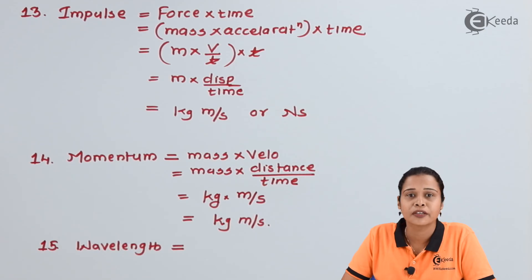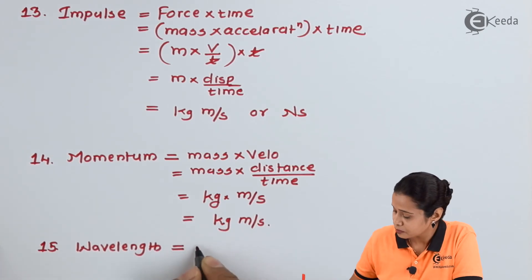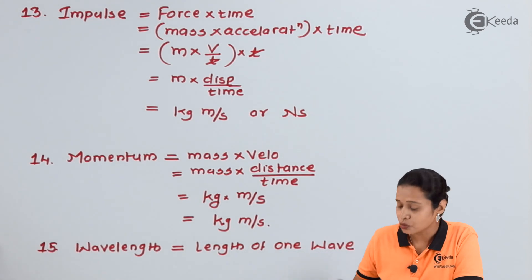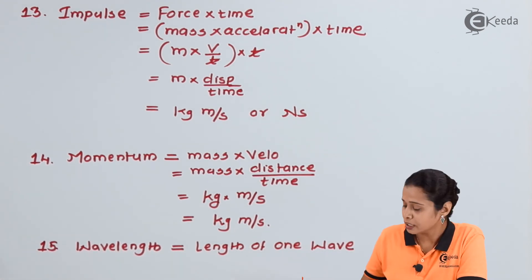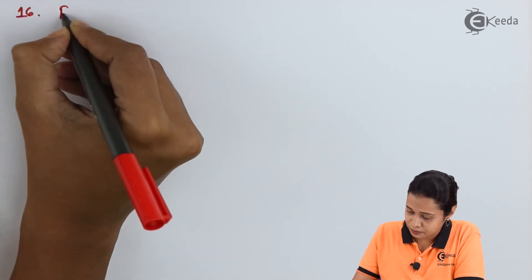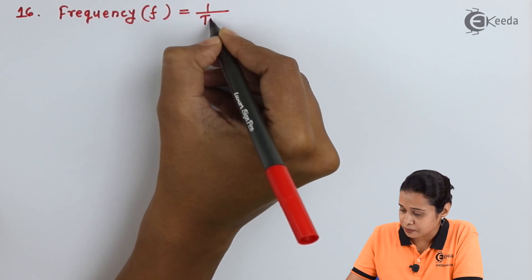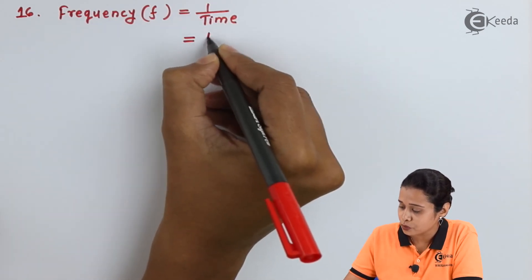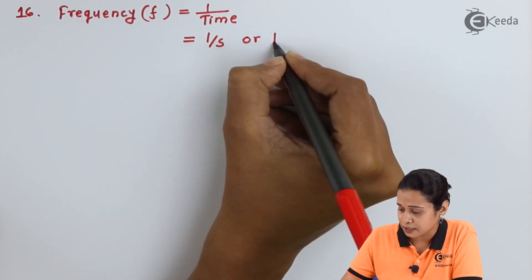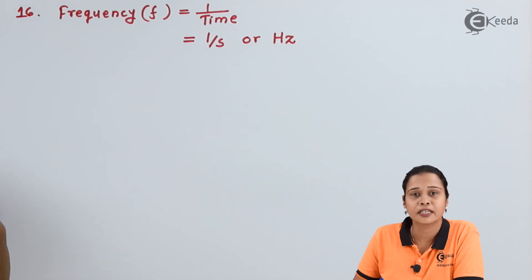The next physical quantity is wavelength. Wavelength is the length of one wave, so it is another type of length. Hence the unit of wavelength is meters. The next physical quantity is frequency, denoted by f, which is equal to 1 upon time. The unit of frequency is 1 per second, or hertz. So there are two units for frequency: per second (s⁻¹) or hertz.